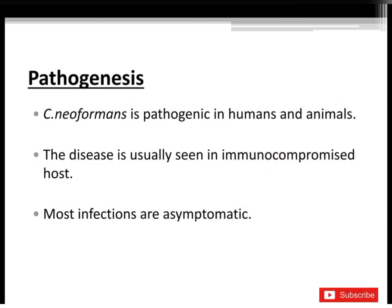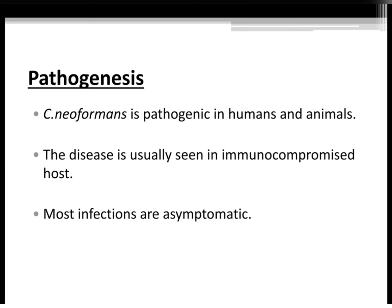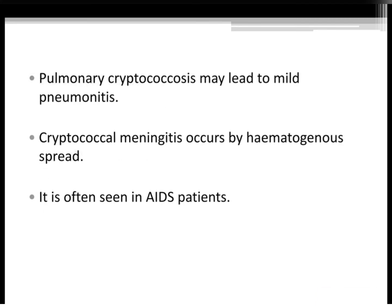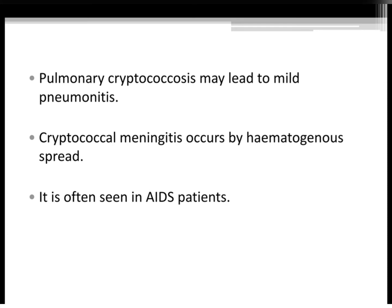Pathogenesis: Cryptococcus neoformans is pathogenic in humans and animals. The disease is usually seen in immunocompromised hosts. Most infections are asymptomatic. Pulmonary cryptococcosis may lead to mild pneumonitis. Cryptococcal meningitis occurs by hematogenous spread and is often seen in AIDS patients.